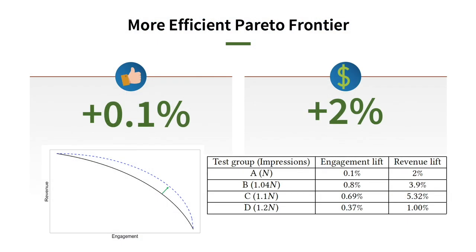Designing a solution that addresses all of the above has enabled us to serve hundreds of millions of users over the past years. Our algorithm gives a modest engagement lift of 0.1% and a significant revenue lift of 2% over a baseline method under the condition of the same amount of ad impressions. We also tested various levels of ad impressions and obtained consistent positive results, showing our solution improved the efficiency frontier compared to the baseline algorithm.